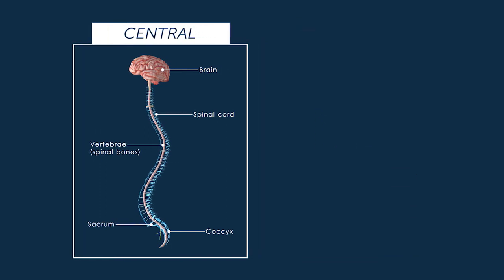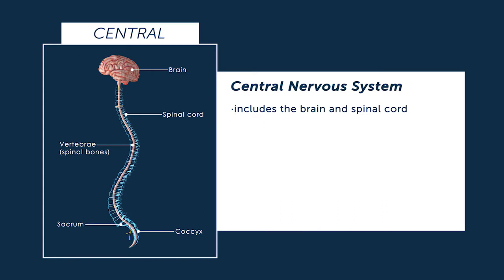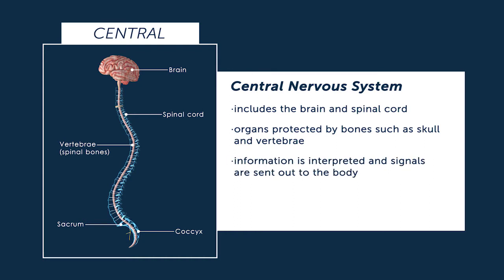The central nervous system includes the brain and spinal cord. These organs are protected by bones such as the skull and vertebrae. This central nervous system is where information is interpreted and where signals are sent out to the body.